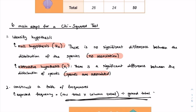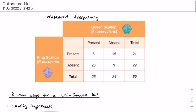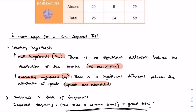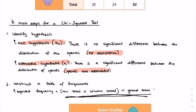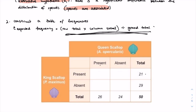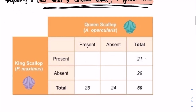To determine which hypothesis must be accepted or rejected for our given observed values, we must start by calculating the expected frequencies — that is step two. Step two is to construct a table of expected frequency values. You can do this by doing the row total times the column total divided by the grand total. So for the quadrats where both species were present, this would be 21 times 26 divided by 50, which gives 10.9.